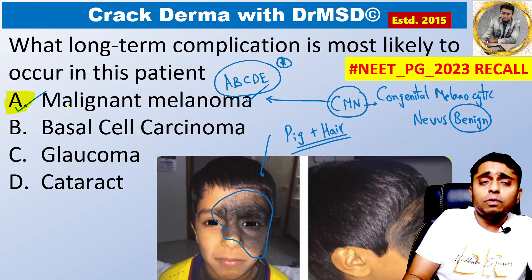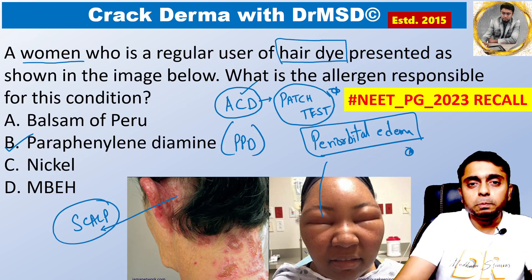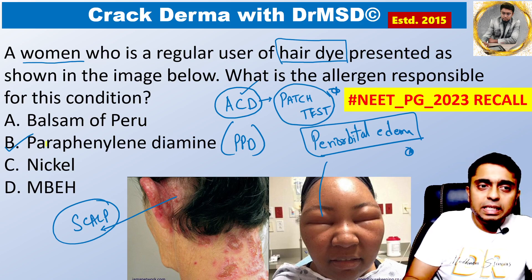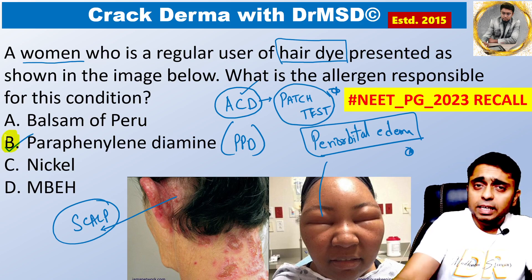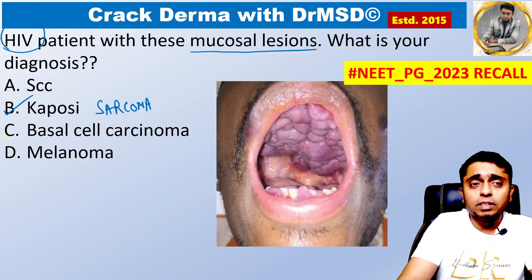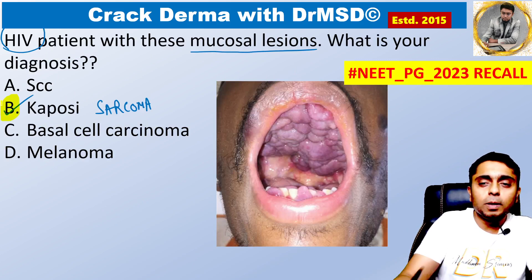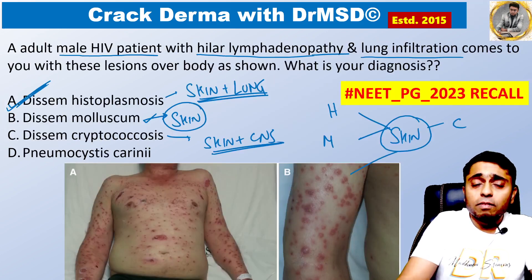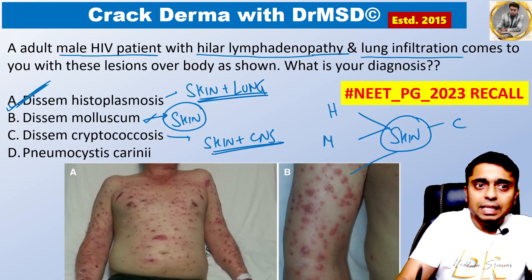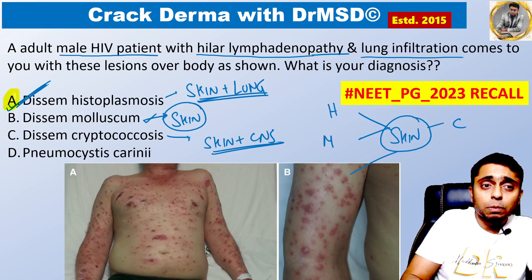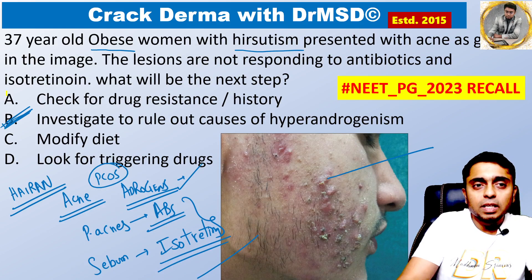For this question, the answer is malignant melanoma. For this question, the answer is option B, paraffin in diamond. For this question, the answer is Kaposi sarcoma. For this question, the answer is disseminated histoplasmosis.